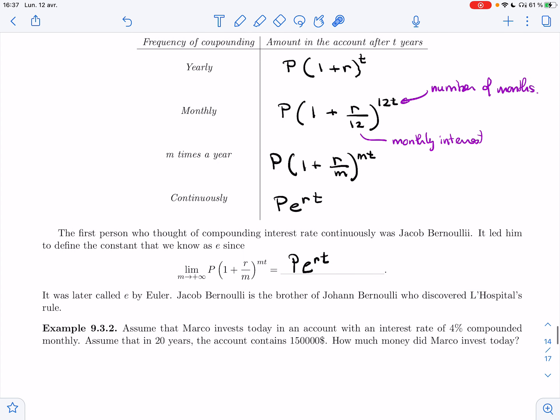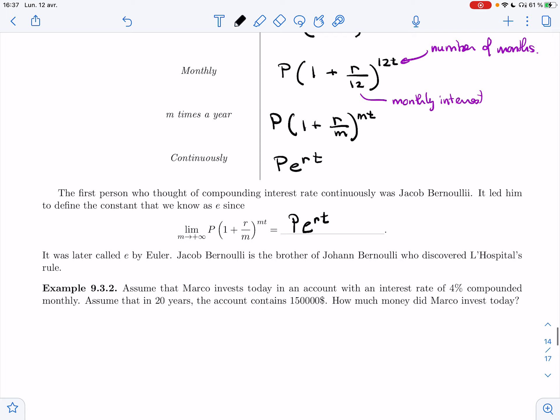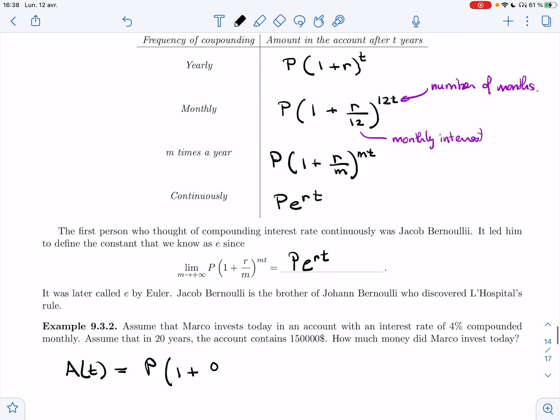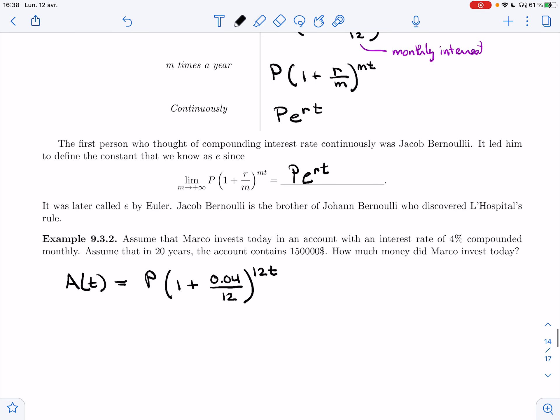Example 9.3.2. Assume that Marco invests today in an account with an interest rate of 4%, compounded monthly. Assume that in 20 years, the account contains $150,000. How much money did Marco invest today? So, A(t) is monthly. So this is the formula we have. P(1 + R) - R is 4%. So 4%, which means 0.04, divided by 12, because the rate is yearly, to the 12t. And we know that A(20) - 20 is 240 here - this is equal to $150,000.